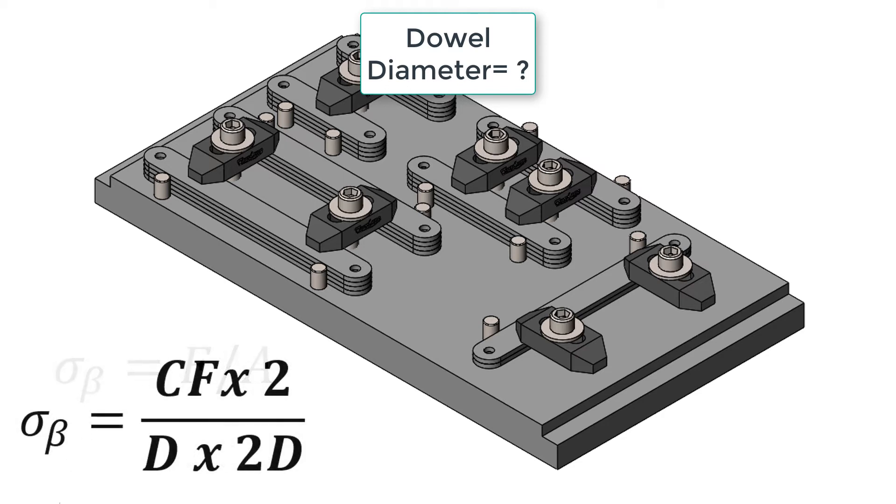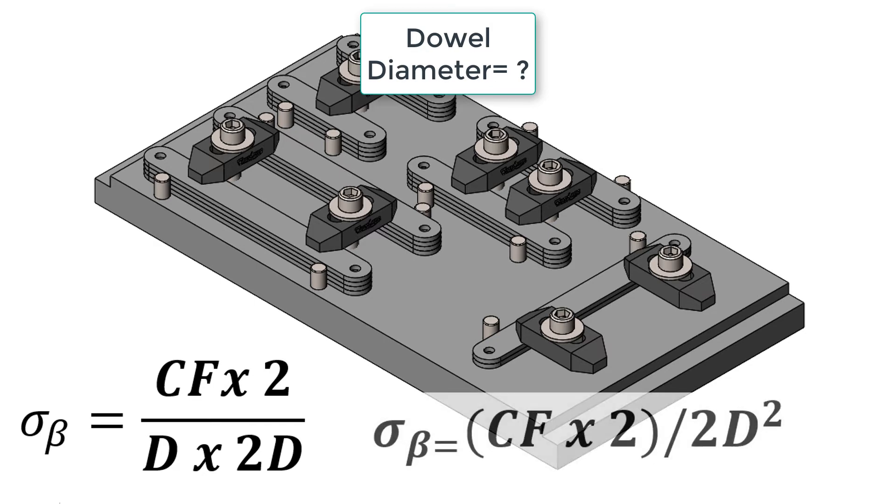And if we let the length of engagement, that is how far the dowel is pressed into the plate shown here, be two times the diameter, the formula now becomes the cutting force times two divided by two times the diameter squared.